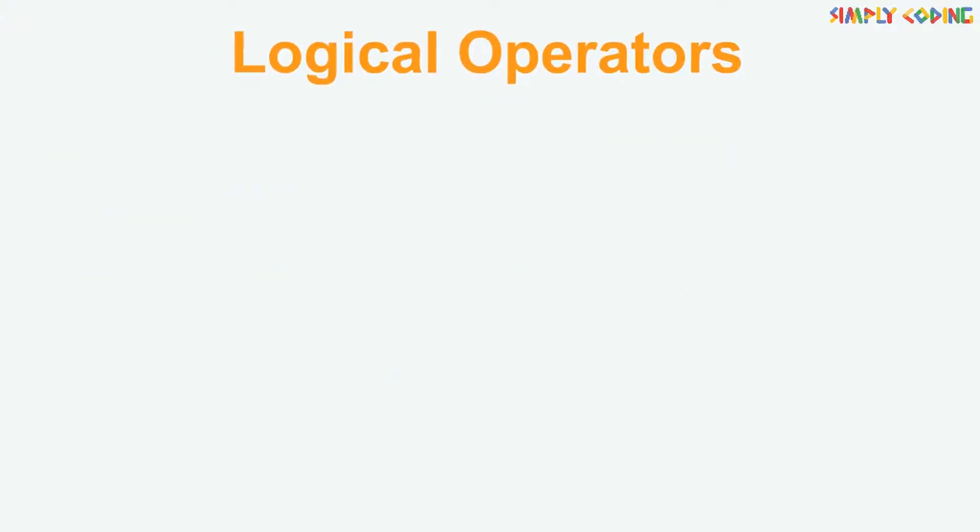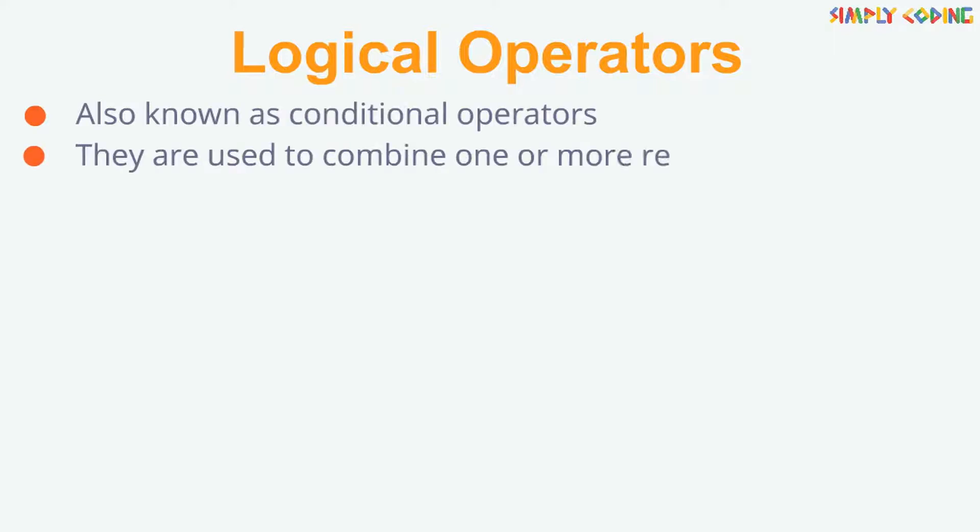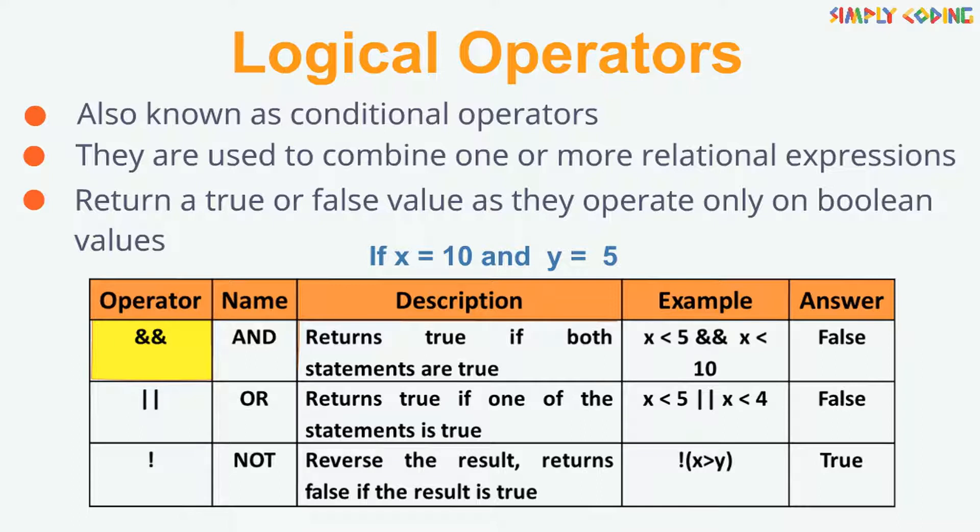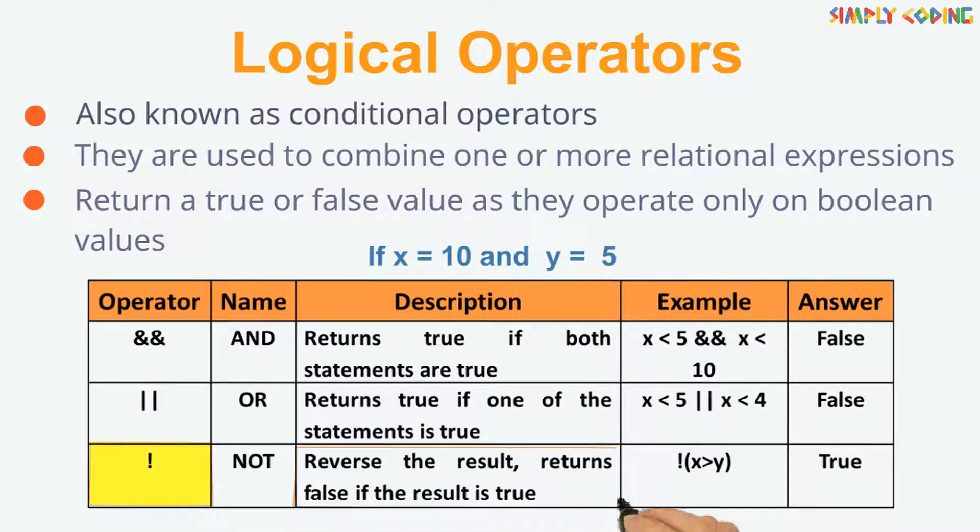Next, let's take a look at logical operators. They are used to combine one or more relational expressions and they too return a true or false value as they operate only on boolean values. Let's see each one of them. AND returns true only if both statements are true. OR returns true if one of the statements is true. NOT reverses the result, returns false if the statement is true.